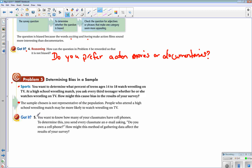So, let's look at a different scenario. You want to know how many of your classmates have cell phones. To determine this, you send every classmate an email asking, do you own a cell phone? How might this method of gathering data affect the results of your survey?